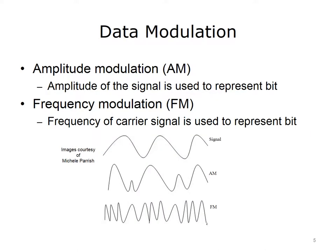The amplitude and frequency of a signal can be changed or modulated to represent data. For example, if we are using amplitude modulation, a big amplitude represents a 1, whereas a lower amplitude represents a 0. With frequency modulation, lots of changes in a signal over a given period of time represent a 1, whereas fewer changes represent a 0. Amplitude modulation is used by AM radio.